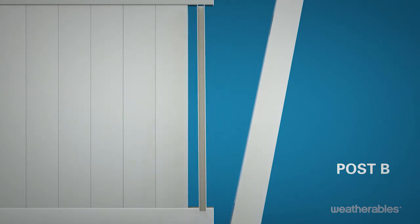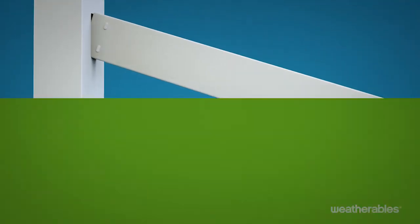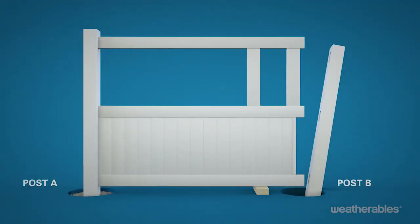Install the remaining U-channel on the last picket so it will rest along post B. Then slide the top rail with the aluminum insert into post A. Repeat the process to install the pickets between the mid and top rails.